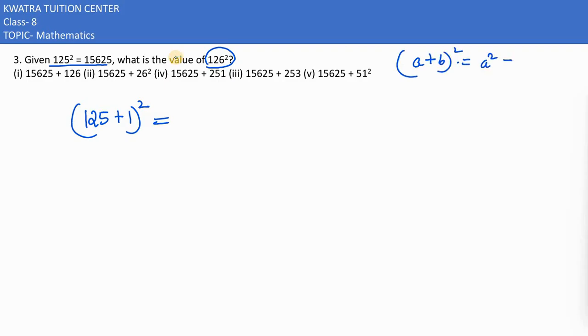We always use the identity which is (a+b)² = a² + b² + 2ab. This means we take the first number's square, the second number's square, and the third term is 2 into a into b.